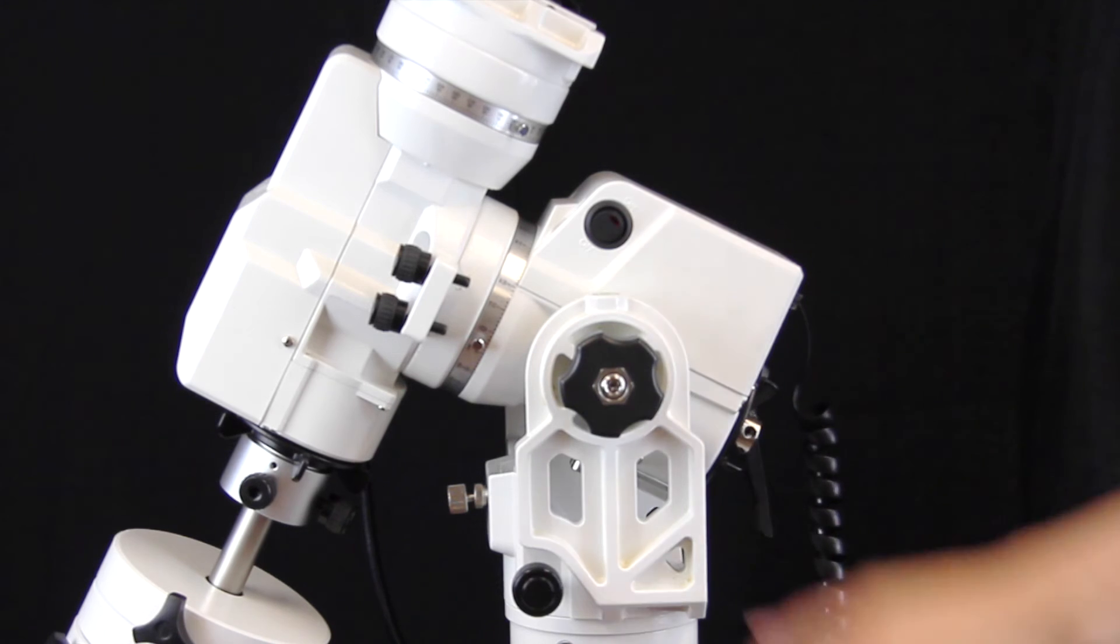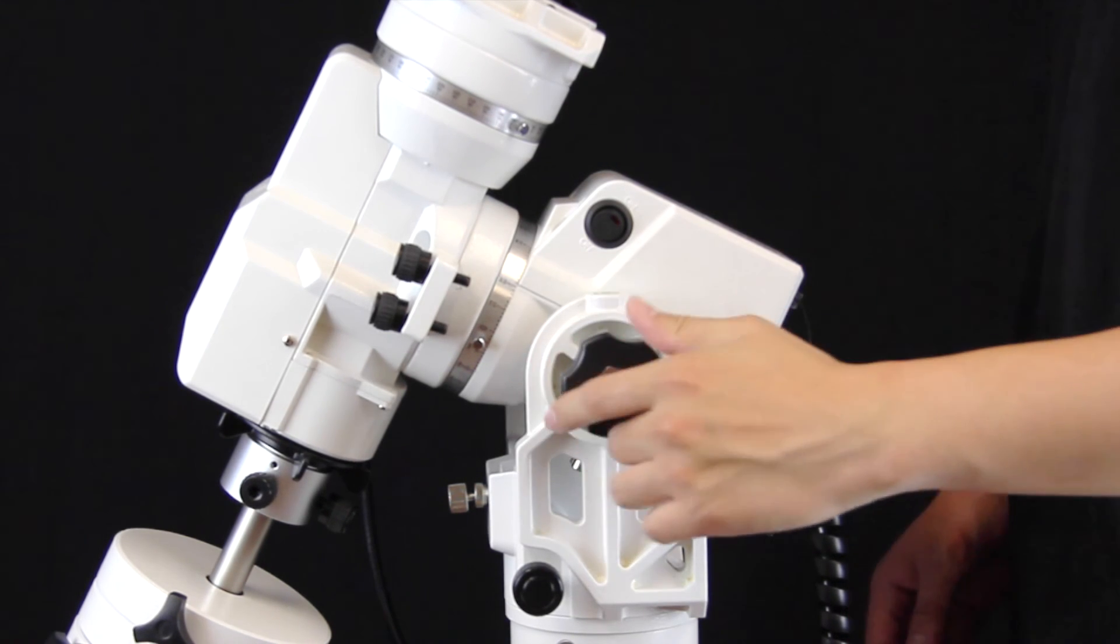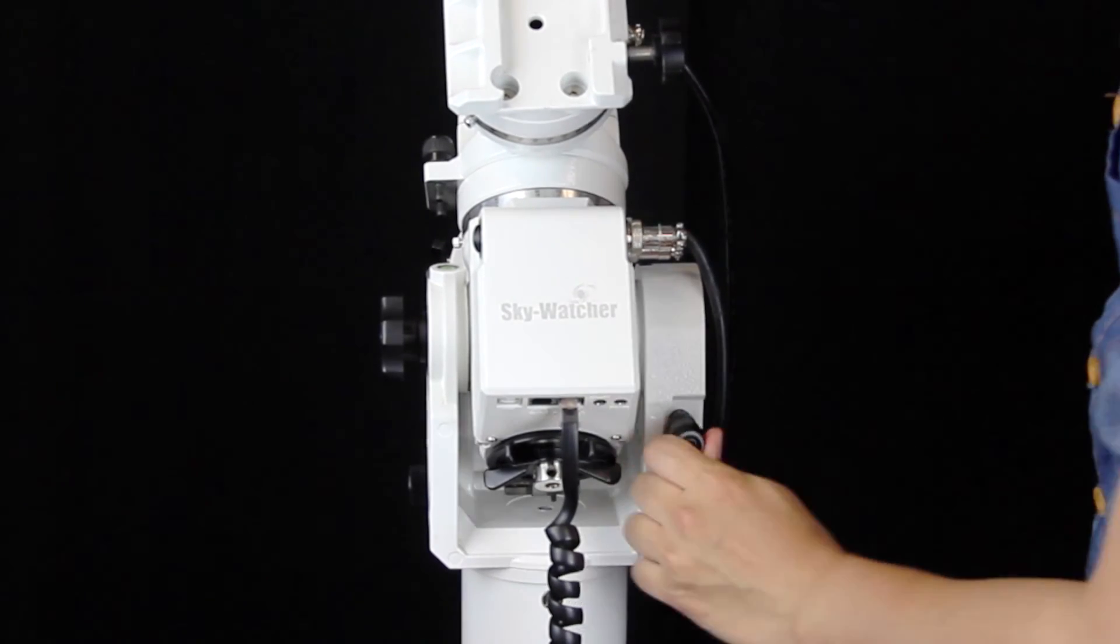To set up AZ mode, loosen the fork thumb screw, then use the latitude adjustment to tilt the mount up to 90 degrees.